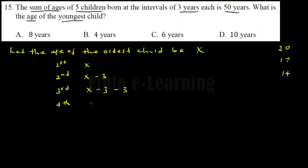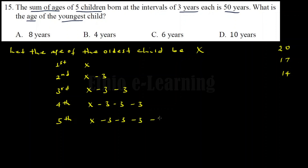So let's say the first child — the oldest — is x. Then we have x minus 3, x minus 3 minus 3, x minus 3 minus 3 minus 3, and x minus 3 minus 3 minus 3 minus 3. That gives us five children's ages expressed in terms of x.